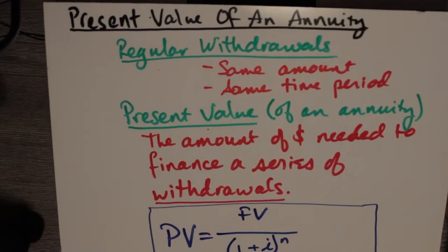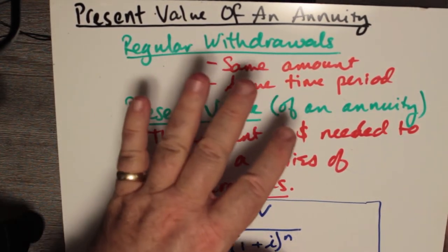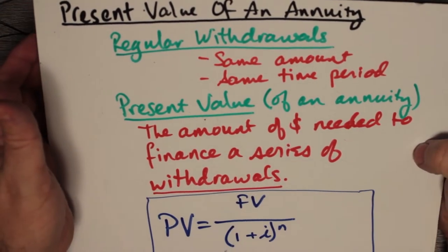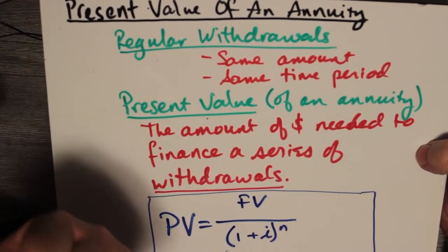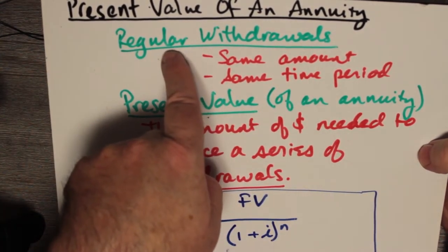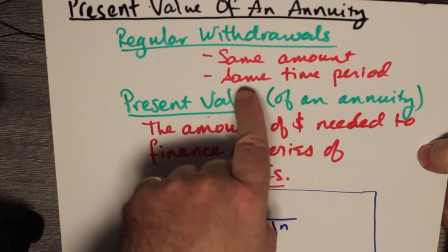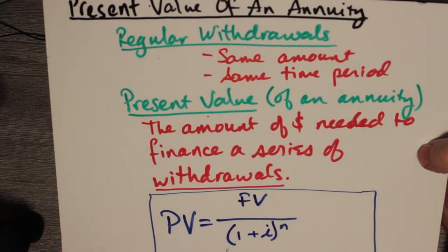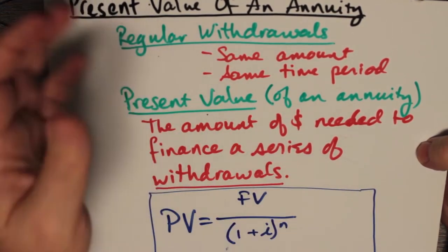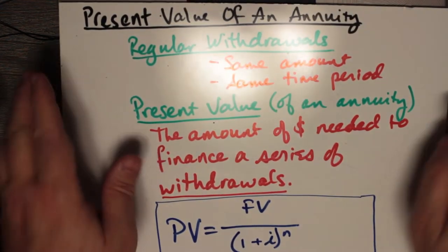Welcome to this talk on the present value of an annuity. These ideas make use of the concept of regular withdrawals. If you have a large sum of money you wish to take regular withdrawals from, it will deplete. A withdrawal is regular if it is the same amount of money for each withdrawal and over the same time period — for example, once a month, always the same amount.